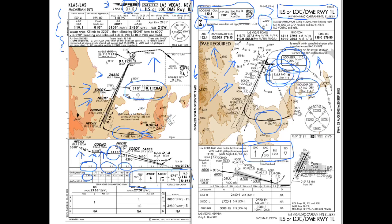On the Jeppesen side, the missed approach icons appear above the minimums section, and the approach lighting system is shown below. It's a much better place for it since it's associated with the minimums and landing segment, not something you're glancing at constantly. It's also clearly depicted with a picture, labeled PAPI or VASI, rather than the FAA chart's MALCIF designation with an A4 indicating pilot-controlled lighting. It's much easier to understand on the Jeppesen chart.